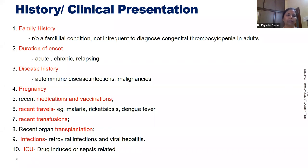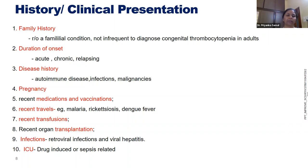Duration of onset — acute, chronic, and relapsing — is important. Some ITPs may have acute presentation, some are chronic, and some relapse frequently while others go into spontaneous remission. Disease history includes immune thrombocytopenia secondary to other autoimmune disorders, viral infections like hepatitis C, and malignancies where there is marrow infiltration — these are underlying diseases which may reflect a low platelet count.